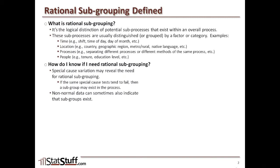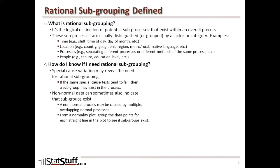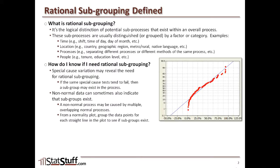Non-normal data can sometimes also indicate that subgroups exist. A non-normal process may be caused by multiple or overlapping normal processes. From a normality plot, you can group your data points for each straight line in the plot to see if a subgroup exists. For example, on a normality plot along a logarithmic scale, a non-normal distribution won't fall right on the straight line it's trying to fit. You might see a certain portion of the data that tends to fall within the straight line — call that subgroup A — and another portion that fits a different straight line, which may be a natural subgroup to split apart. This isn't always going to work perfectly every time, but it could be a good step for where you want to split your data between subgroups.